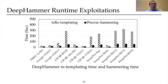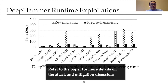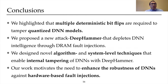Overall, our system-level results show that DeepHammer poses practical and serious concerns to a variety of DNN architectures. Due to time limitations, we suggest interested audience to refer to the paper for more details on attack and mitigation evaluations. As a conclusion, we highlight that multiple deterministic bit flips are required to tamper quantized DNN models. We propose DeepHammer, which depletes DNN intelligence through DRAM fault injections, and design novel algorithm and system-level techniques that enable internal tampering of DNNs. Our work motivates the need to enhance the robustness of DNNs against hardware-based fault injections.